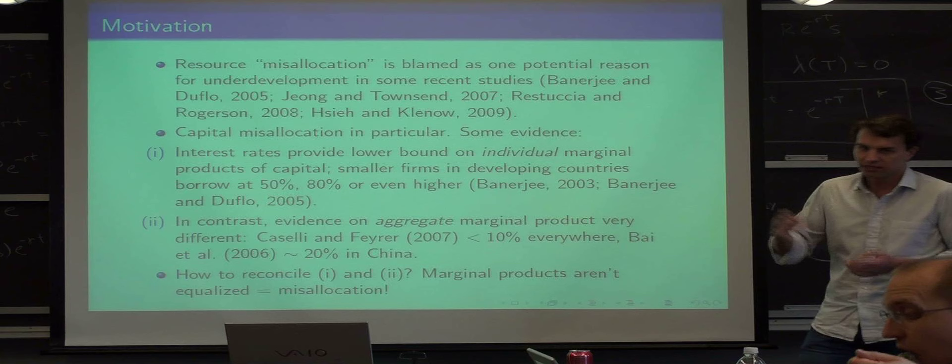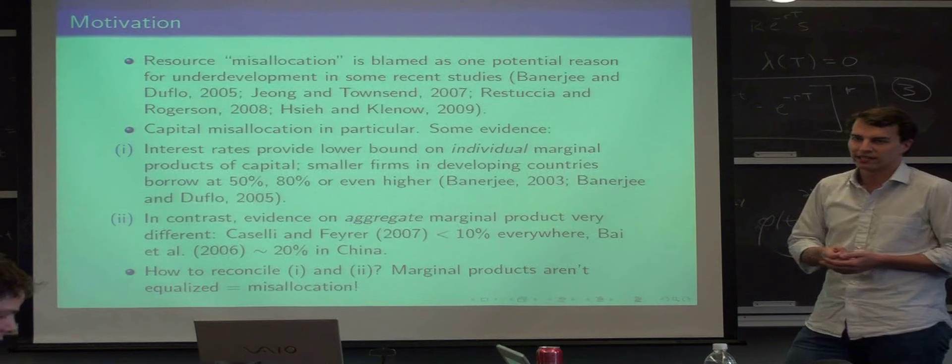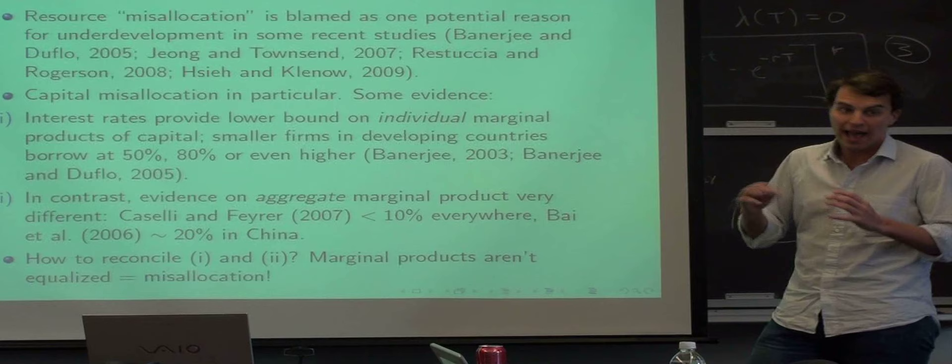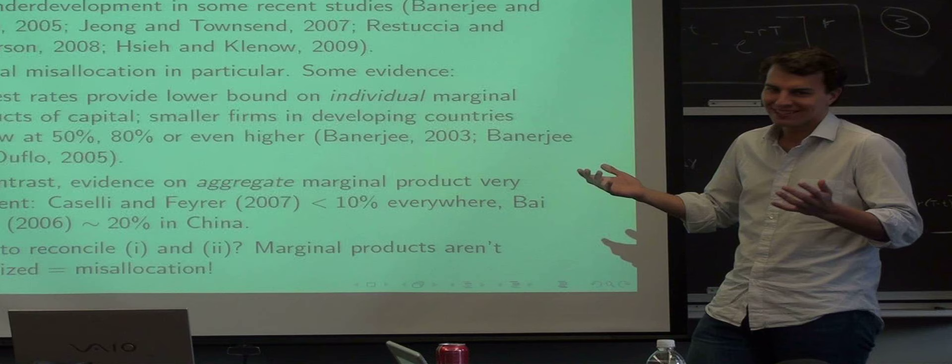Interest rates provide a lower bound on individual marginal products. If you look around in developing countries and look at what interest rates people are prepared to pay for loans for productive purposes, you see crazy numbers like 50%, 80%, or even above 100% per year. The aggregate marginal product is pretty much almost always below 10% everywhere. So how do you reconcile those two?